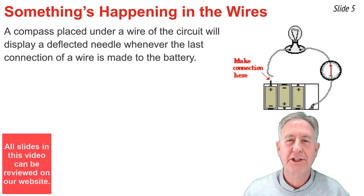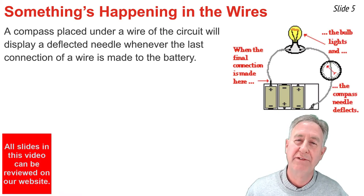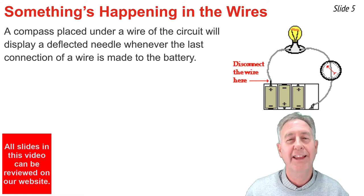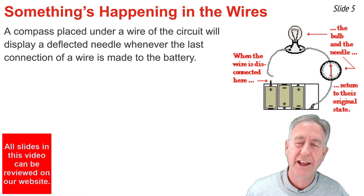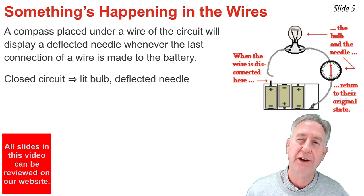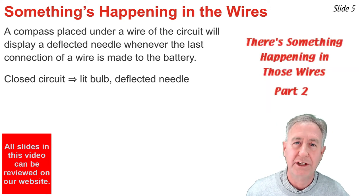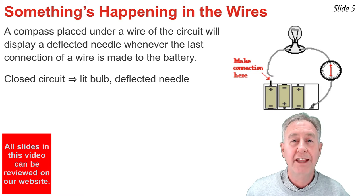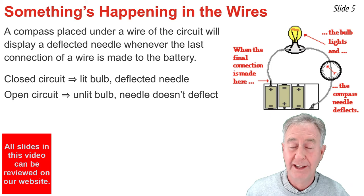One variation of this experiment involves placing a compass needle underneath one of the wires of the circuit. When you do, and you make the last connection of the wire to the battery pack, the light bulb lights and the compass needle deflects from its usual orientation. A closed circuit results in a lit bulb and a deflected compass needle. But when you disconnect a wire from the battery pack, the light bulb is no longer lit and the compass needle is no longer deflected.